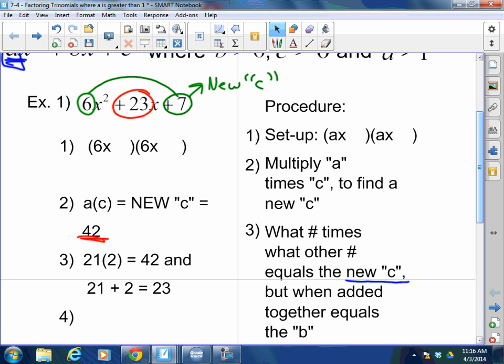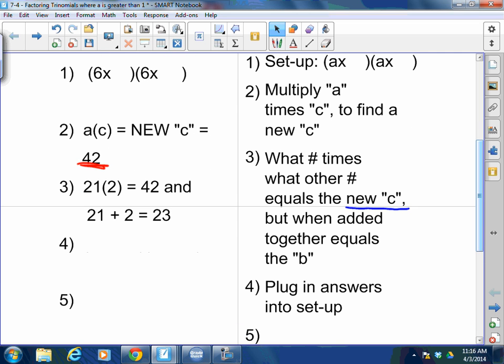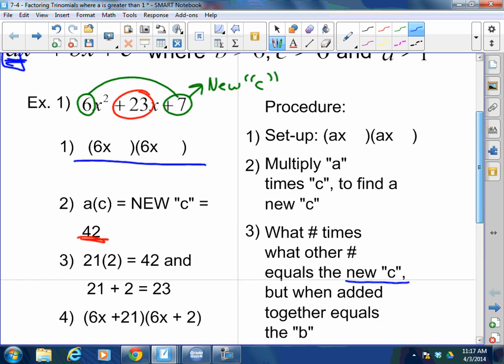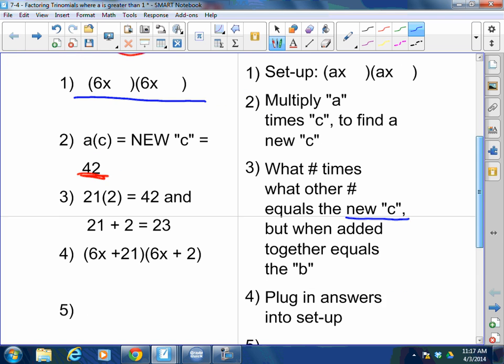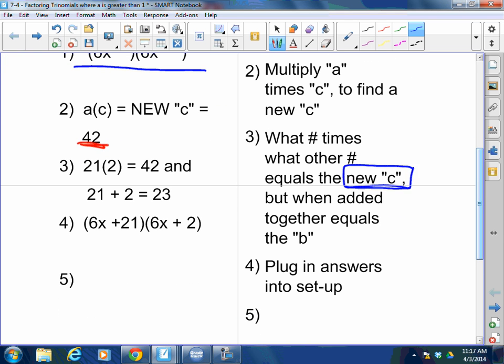And now, just like before, step 4, plug it in. So I have 6x + 21 and 6x + 2. We're almost done. But before I continue, I want to make sure everyone understands. Your setup, ax times ax. Step 2, find the new c. A times c gives you a new c, 42. Step 3, what times what equals the new c, but when added together equals the original b. Step 4, plug in the answers into your setup.